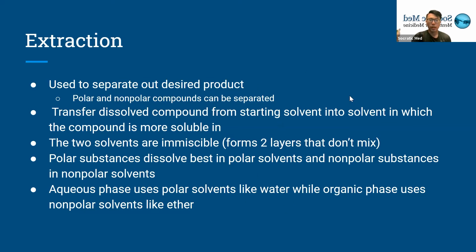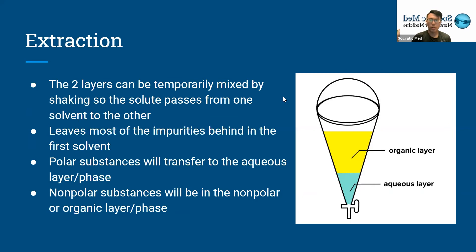These two will be in the separatory funnel, and you will extract the desired product by mixing the two. Because one solvent is non-polar and one is polar, they can't be mixed permanently. But you can temporarily mix them by shaking, so the compound passes from one solvent to another. After shaking, if you let it settle, it will separate again — it's like mixing polar water and a non-polar substance like oil: if you shake them together, they mix briefly, but after a while they will separate again.